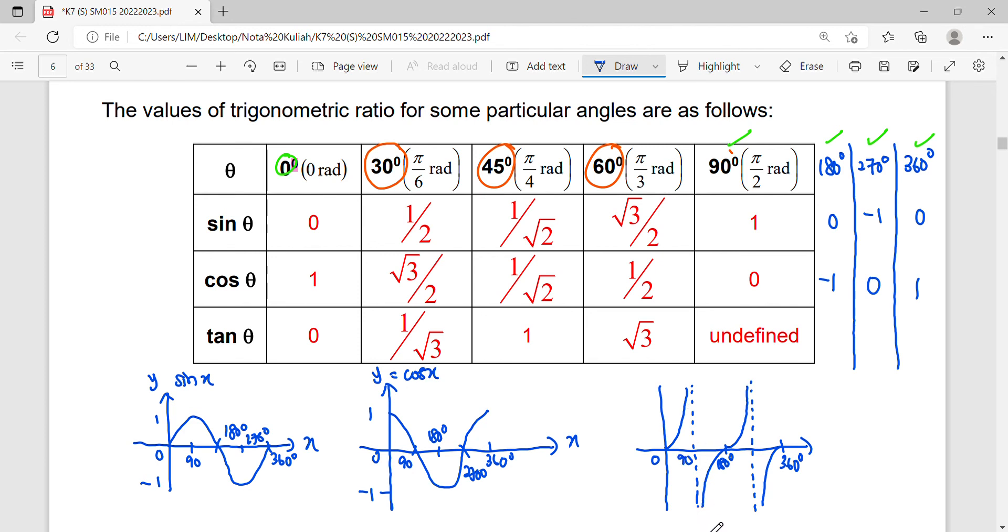The asymptote is the place that is undefined. When you come to 180, the value is zero. When you go to 270, it is undefined. Then when you end up with 360, the value is zero.